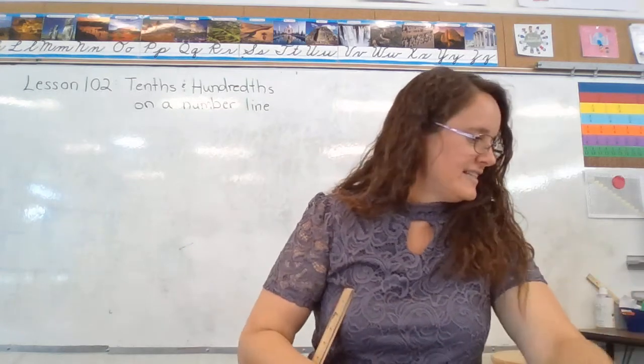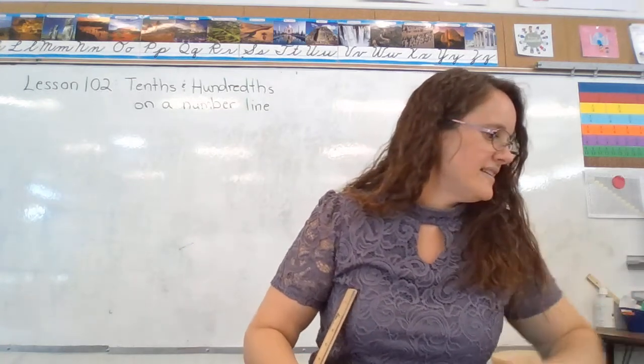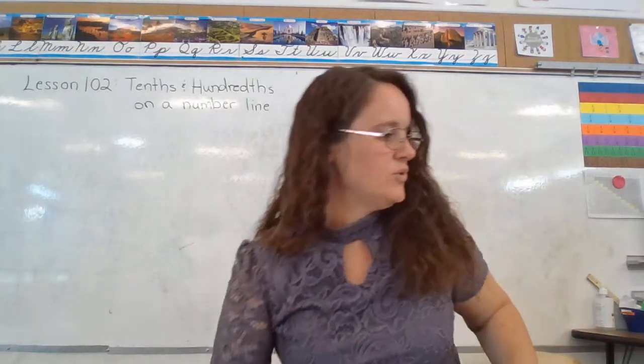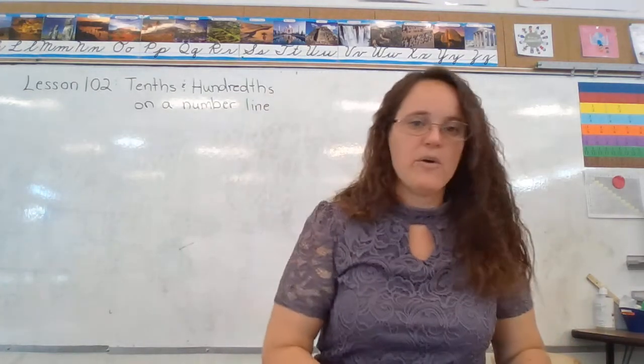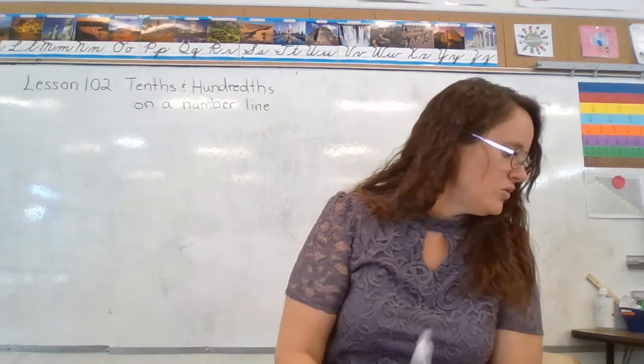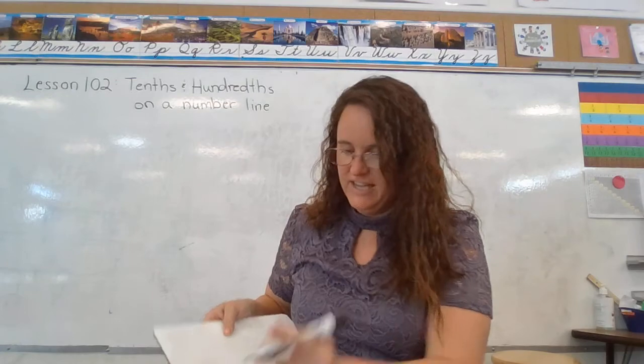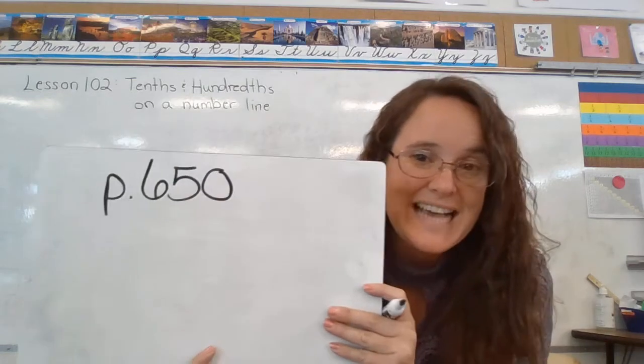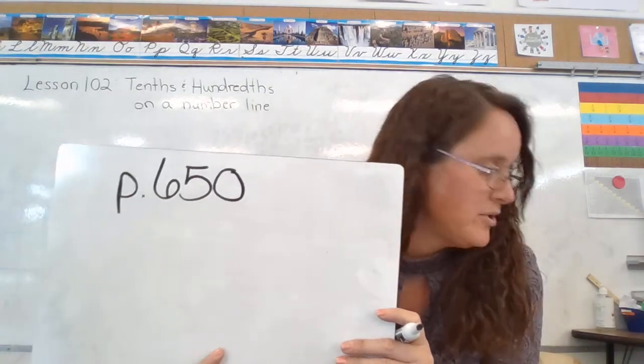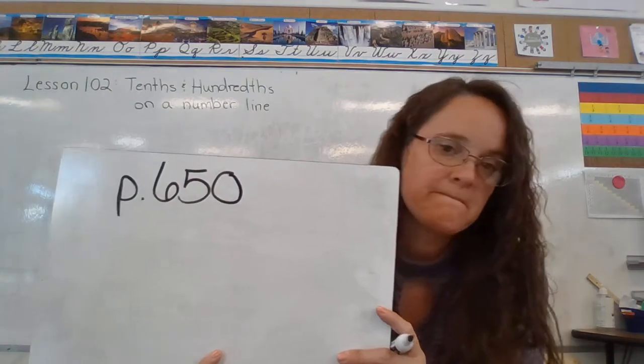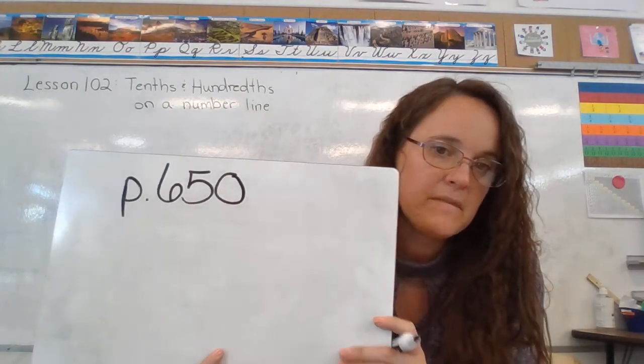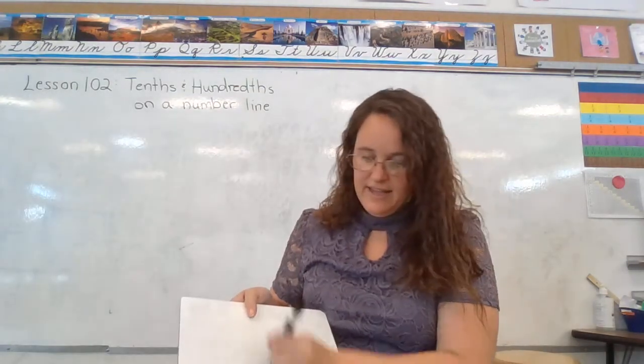Alright, our next example says write the decimal number to which each arrow points. So I want you to open your book to page 650 so that you can see exactly where the arrow points in the book.